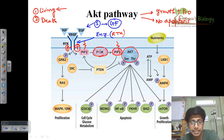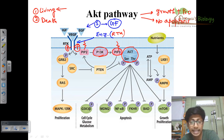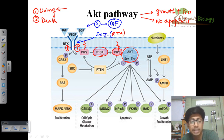Here comes the core of this whole pathway, because we call it the AKT pathway. AKT is a protein that has both serine and threonine amino acid groups present. AKT gets phosphorylated at both the serine and threonine terminals, and once AKT is phosphorylated twice, AKT becomes activated.